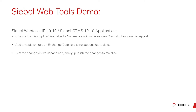For the demo I will be changing the description field label to summary on the administration clinical program list applet. I will also be adding a validation rule to the exchange date field on the same program list applet, which currently doesn't have any validation rule and is accepting any date. I would like to restrict this date field to accept only values which are less than or equal to today. Once we make the changes I would like to quickly test them in the workspace from the application.